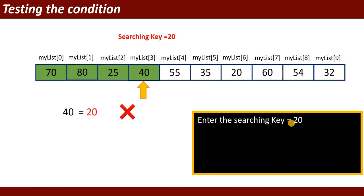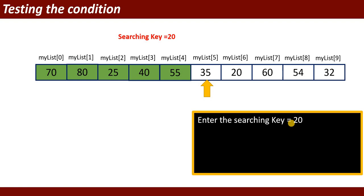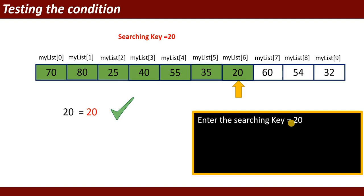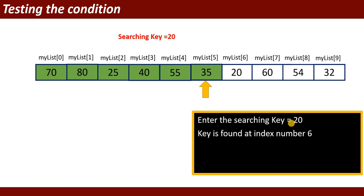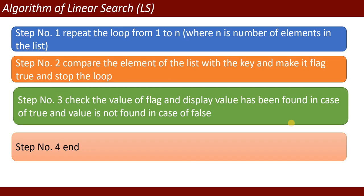It will check 25 equal to 20 — also not true. 40 equal to 20 — not true. 55 equal to 20 — false. 35 equal to 20 — also false. Now 20 equal to 20 — that is true, the condition is matched. It will return the index of the matching value. The key is found at index number six.